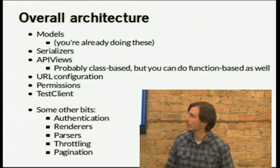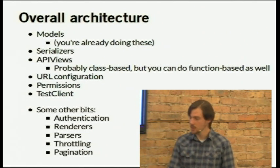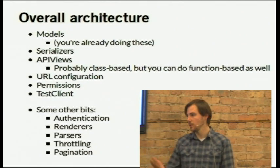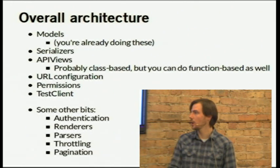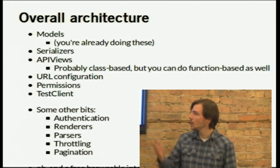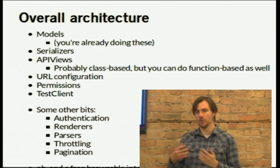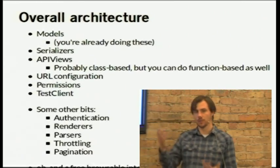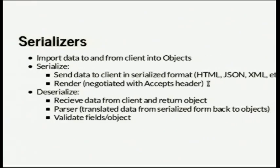You get some other nice bits: authentication, renderers and parsers, throttling, and pagination. Basically it follows the Django and Python philosophy — batteries included. They're all pluggable, so if you want to swap in your own class, you can. One other thing you get is a nice browsable interface. When you design your API, you can open it up in Chrome or Firefox and just see the data coming out. It's really awesome — I'll show you that in a minute.